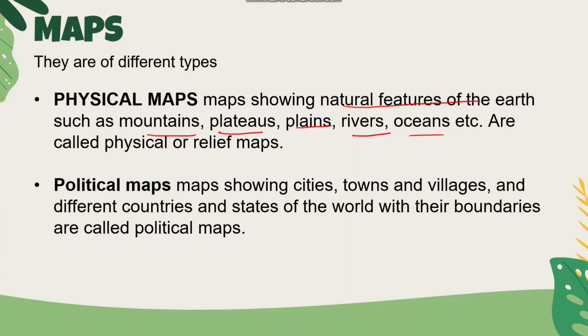A political map shows cities, towns, villages, and different countries and states. The political map shows boundaries — that is why states have boundaries shown on it.